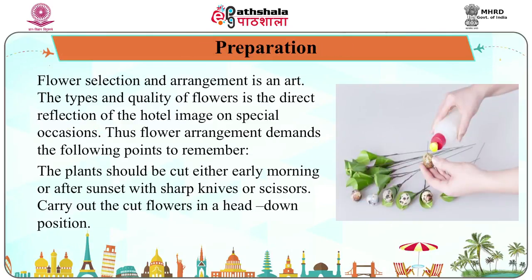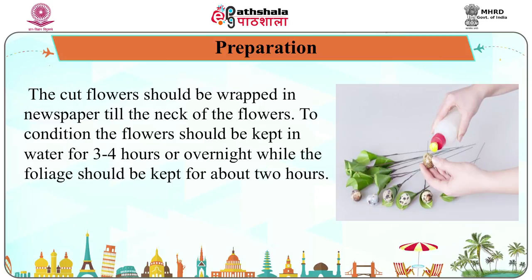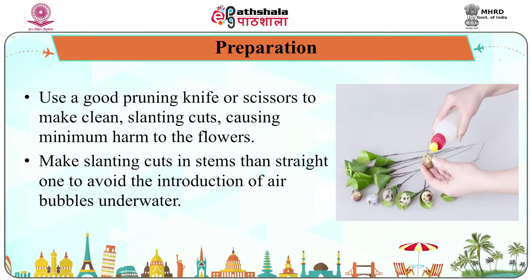Now let us know about preparation of flower arrangements. Flower selection and arrangement is an art. Plants should be cut either early morning or after sunset with sharp knives or scissors. Carry cut flowers in a head-down position. Cut flowers should be wrapped in newspaper till the neck of the flowers. To condition the flowers, they should be kept in water for three to four hours or overnight, while foliage should be kept for about two hours. Use a good pruning knife or scissors to make clean slanting cuts causing minimum harm. Make slanting cuts rather than straight ones to avoid the introduction of air bubbles underwater.